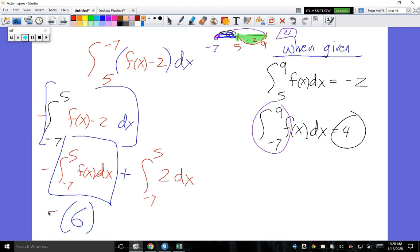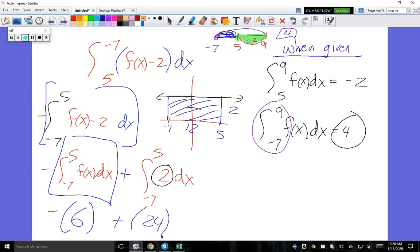From negative 7 to 5, you would have to draw this as a picture. Okay? Here we go. What's f of x? 2. So y equals 2. Specifically, from negative 7 all the way to 5. What's the base of this rectangle? 12. Times the height of 2. So this, bless you, is 24. So the answer would be what? 18.